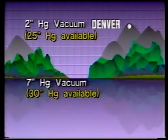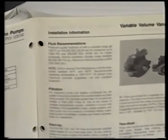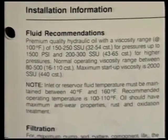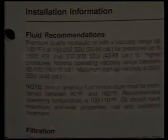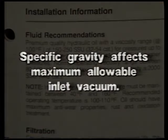Pump specifications are normally given for a pump operating at a certain speed and using a petroleum-based fluid. Therefore the specification must be altered if a different speed or a different fluid is used. For example, if a fire-resistant fluid is used, the difference in the specific gravity of the fire-resistant fluid will affect the pump's maximum allowable inlet vacuum.